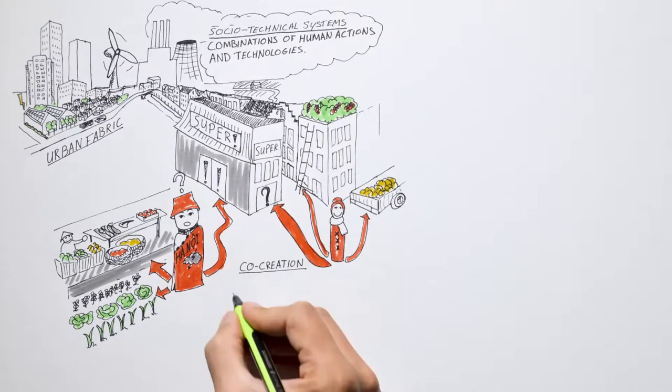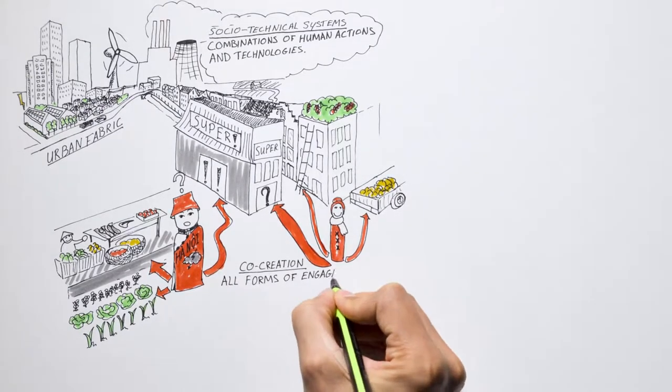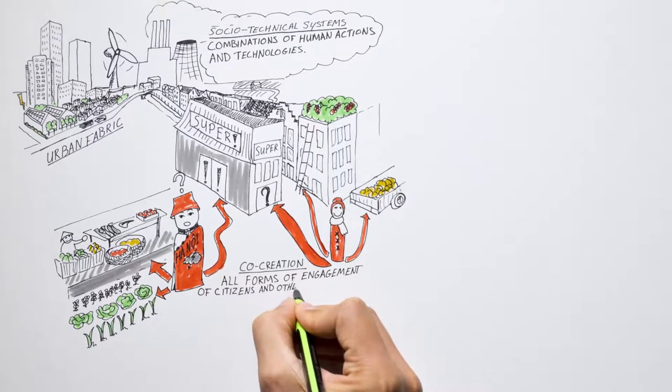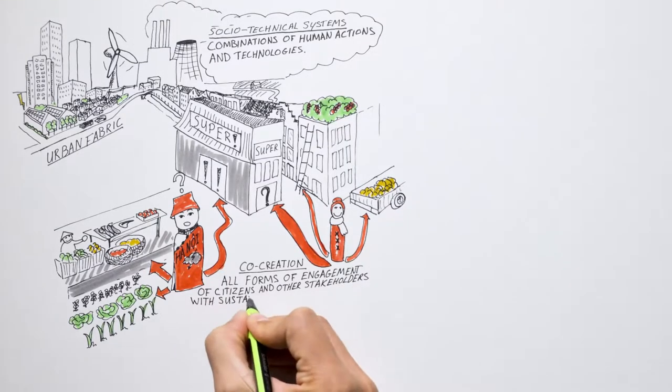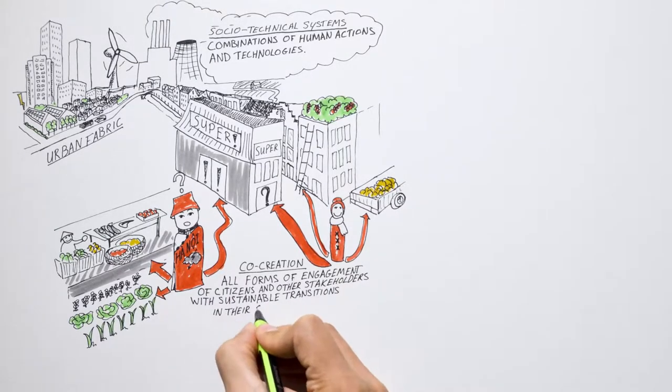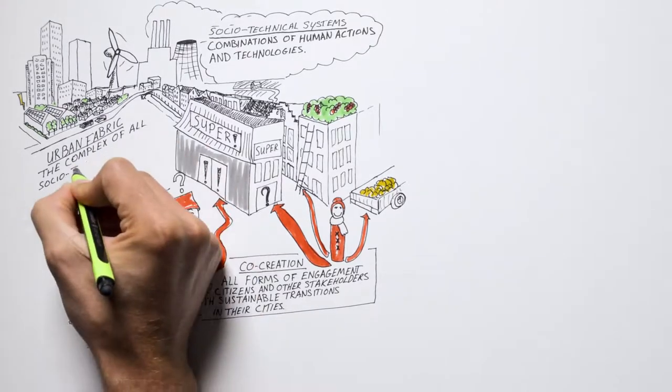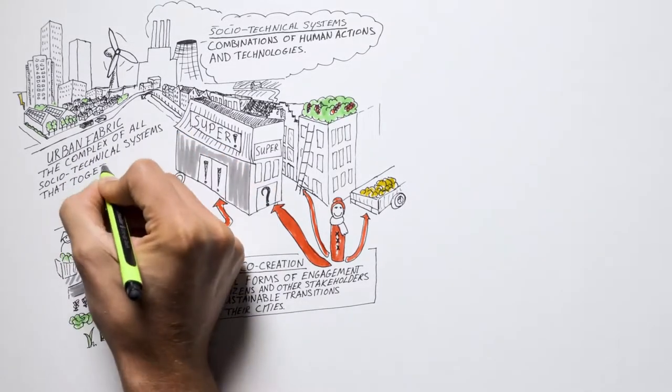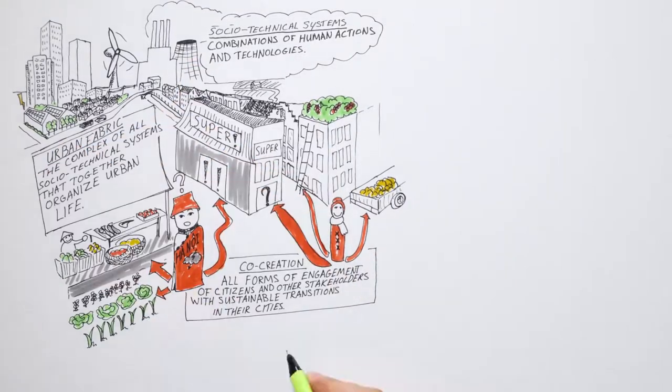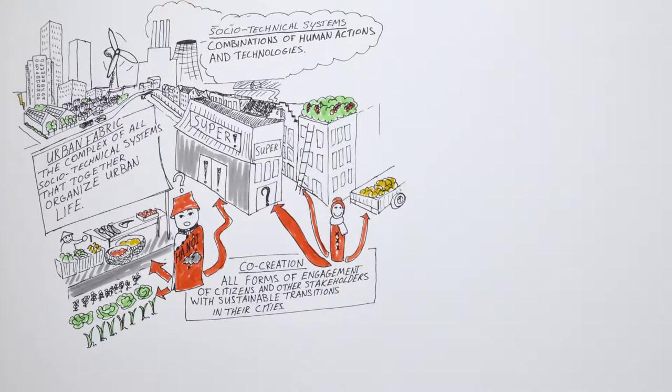We see co-creation as all forms of engagement of citizens and other stakeholders with sustainable transitions in their cities. And what we call the urban fabric is the complex of all socio-technical systems that together organize urban life. The food system is just one example of a socio-technical system.